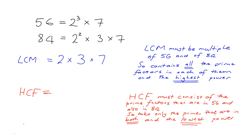Looking at our 2s: the highest power is 2 cubed, so we must have 2 cubed in the lowest common multiple. For the 3, there's only one, so we just take 3. And for 7, there's also only one, so we take 7. So the lowest common multiple is 2 cubed times 3 times 7, which works out to 168. That's the lowest common multiple of 56 and 84.